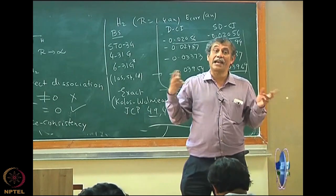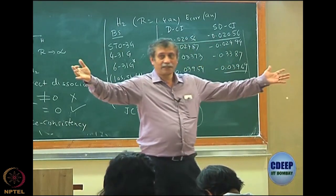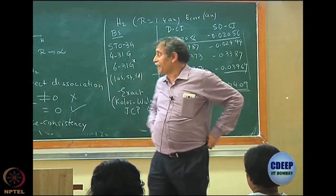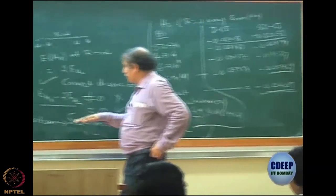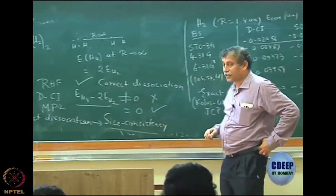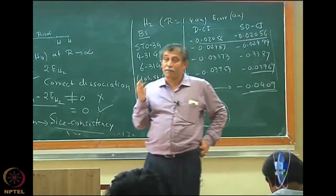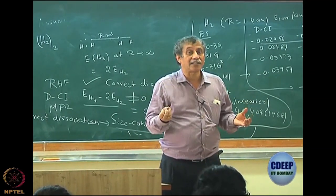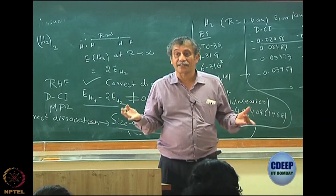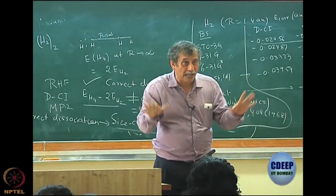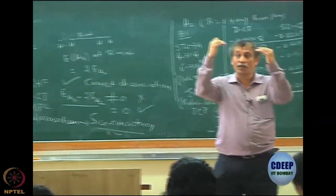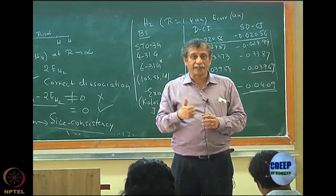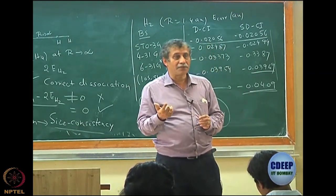Full CI is always size consistent because it is exact. You would not notice the problem with H2, but with H4 you realize it — DCI does not dissociate correctly even though RHF does. One important property of a good model chemistry is not just including correlation, but including it in a size-consistent way. This was first pointed out by John Pople and Rod Bartlett in 1976 in the International Journal of Quantum Chemistry Symposium.